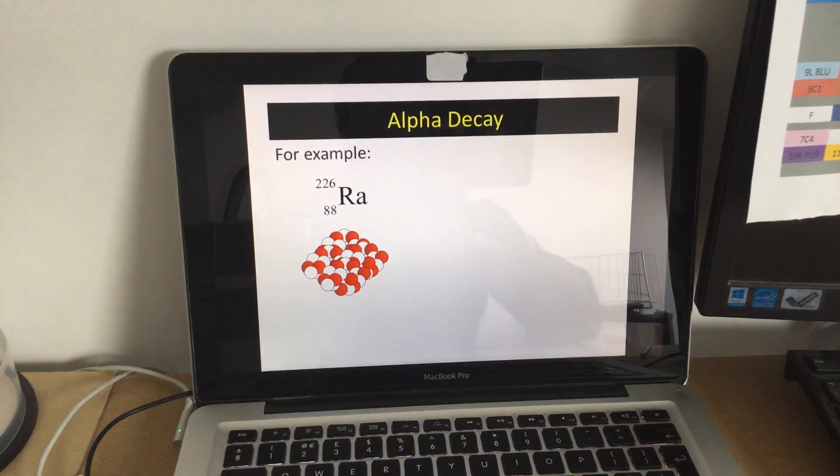This is radium, this is what it looks like, so the reds are the protons, I suppose, and the whites are the neutrons. There are 88 and 226 are the two numbers, so there's 88 protons and 226 protons plus neutrons, so quite a few more neutrons there.